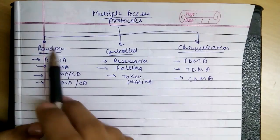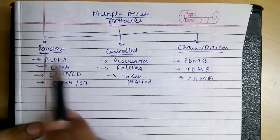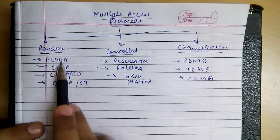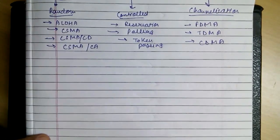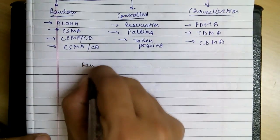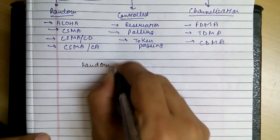As we categorize the three types of protocols in multiple access—random, control, and channelization—let's first understand the random access category.